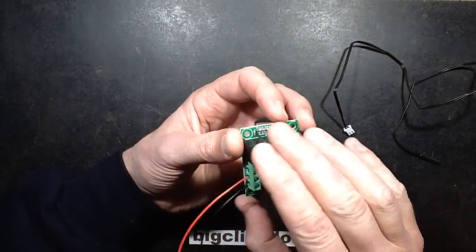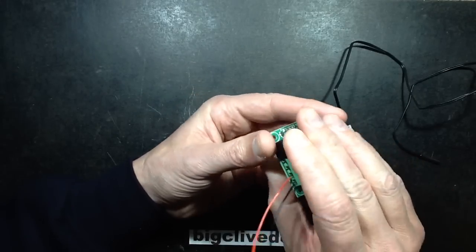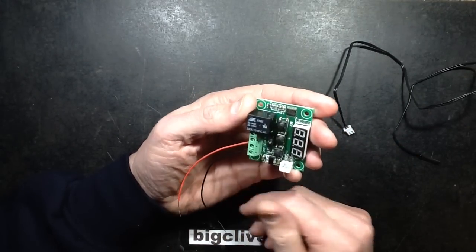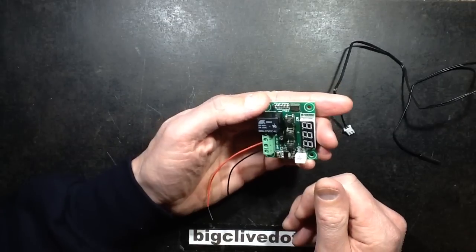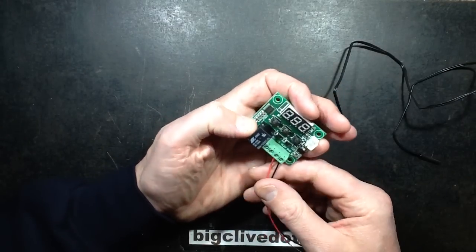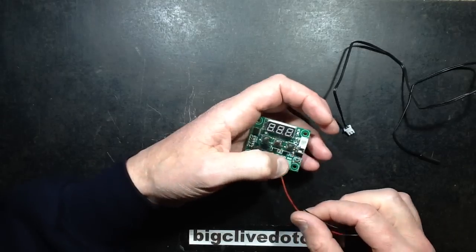I wouldn't run it at that sort of current. I'd use it to switch other loads. In this case, maybe just a 24 volt contactor or a 12 volt contactor or even a solid state relay.